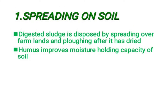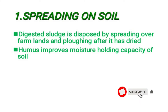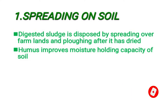Spreading on soil. Here, digested sludge is disposed by spreading over farmlands and ploughing after it has dried. Humus improves moisture holding capacity of soil and land.